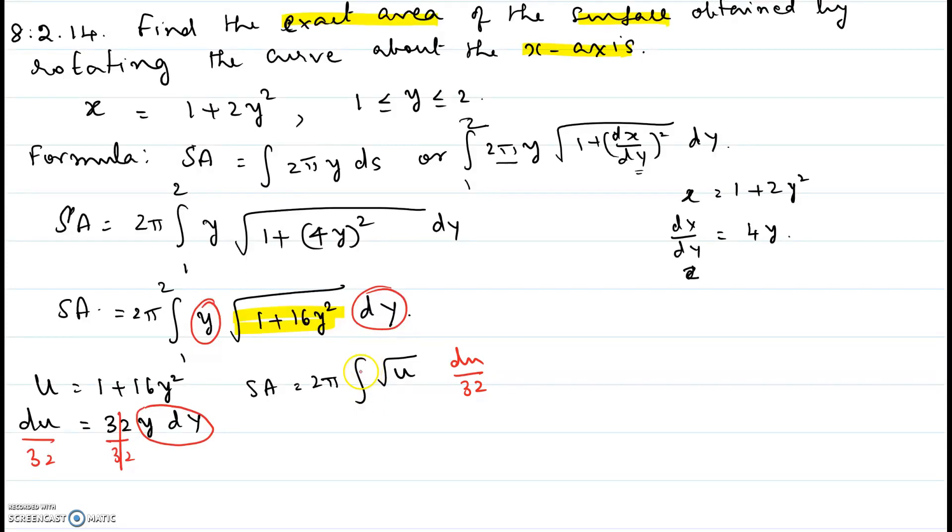So either you can change the limits right now and plug in the limits for u, or you can do the whole problem and integrate and then change it back to the original variable y and then give the limits for y. Either way it's going to work. So I'm going to use the technique of changing the limits right away.